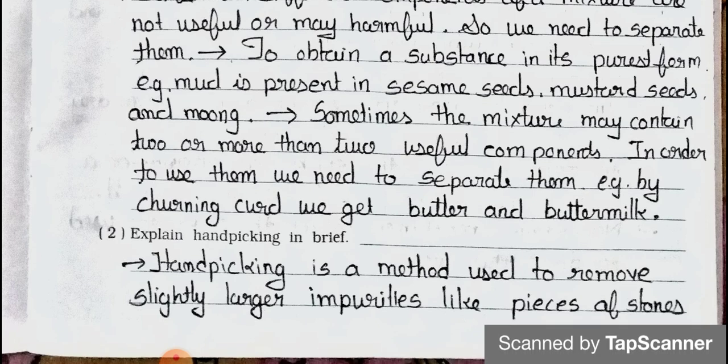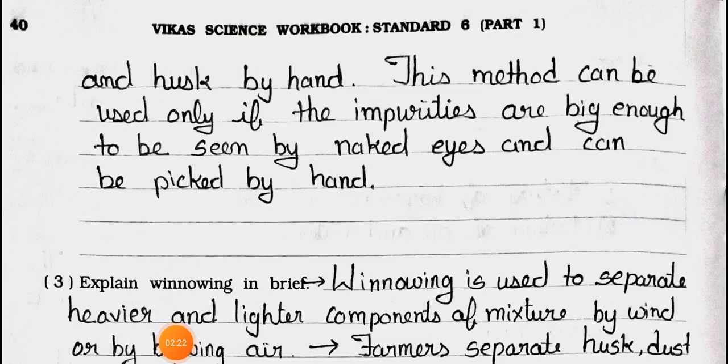Question 2: Explain hand picking in brief. Answer: Hand picking is a method used to remove slightly larger impurities like pieces of stone and husks by hand. This method can be used only if the impurities are big enough to be seen by the naked eye and can be picked by hand.